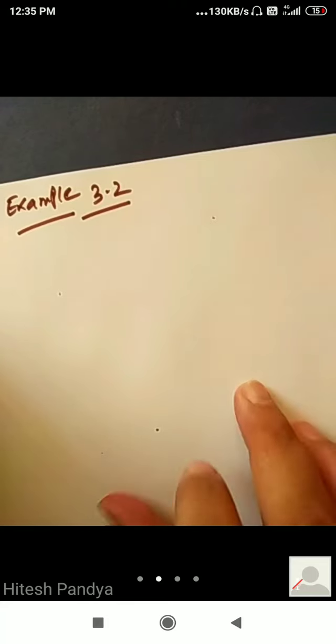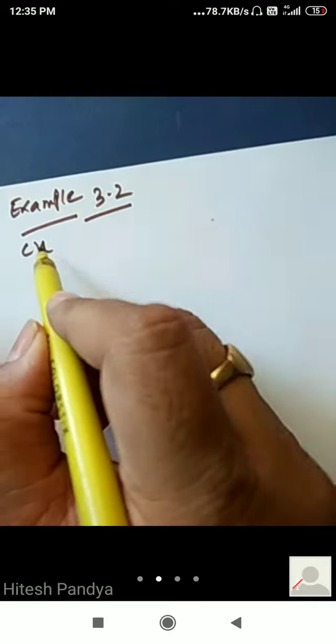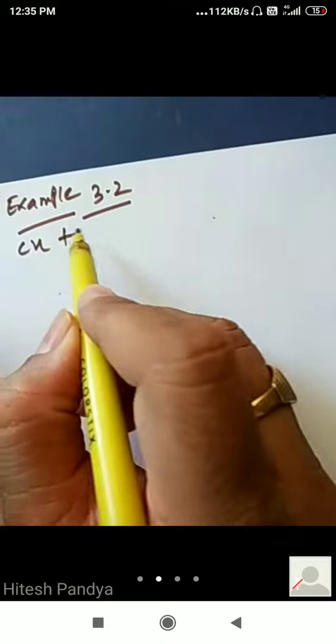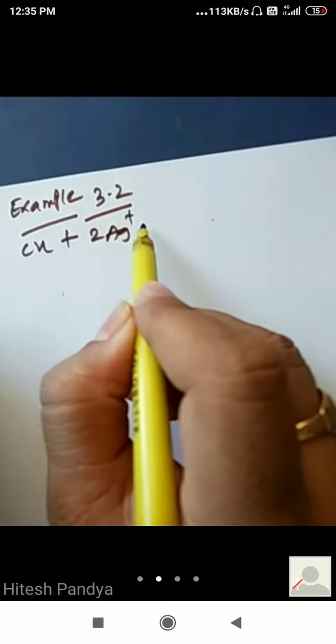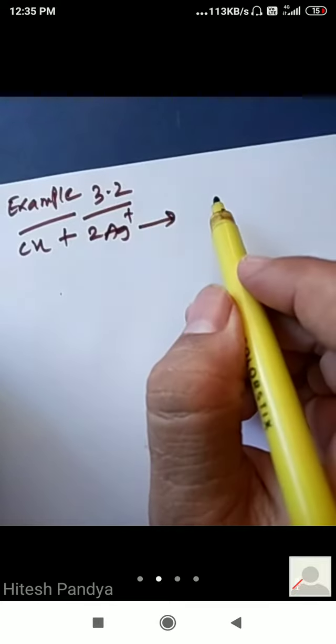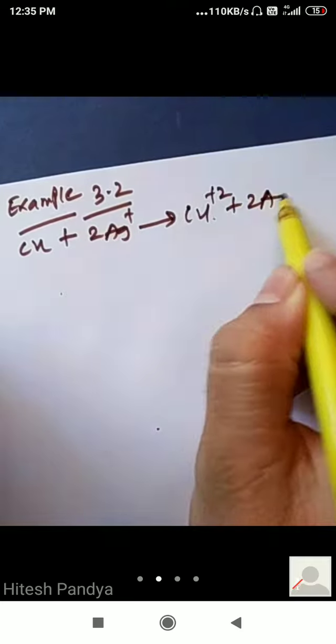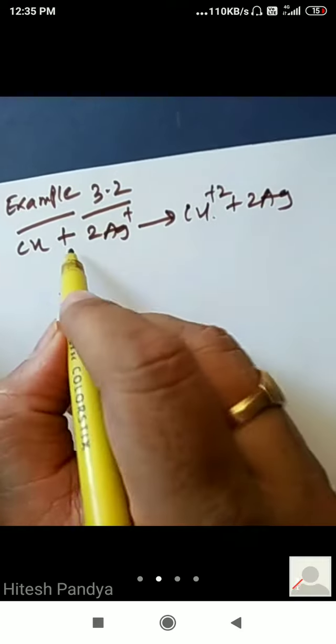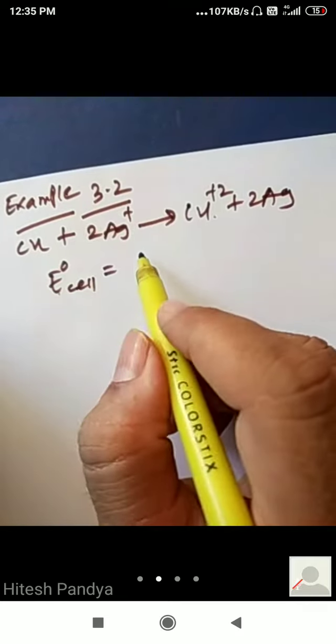Example 3.2. Calculate the equilibrium constant of the reaction Cu plus 2 Ag plus gives Cu 2 plus plus 2 Ag. E not cell is given as 0.46 volts.